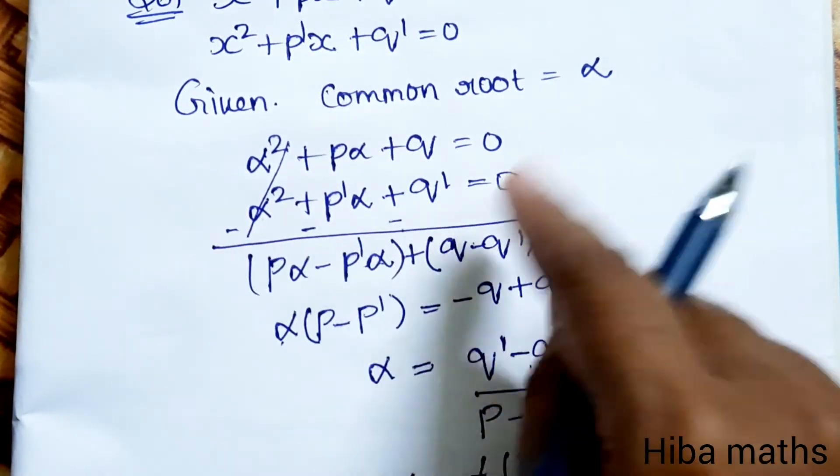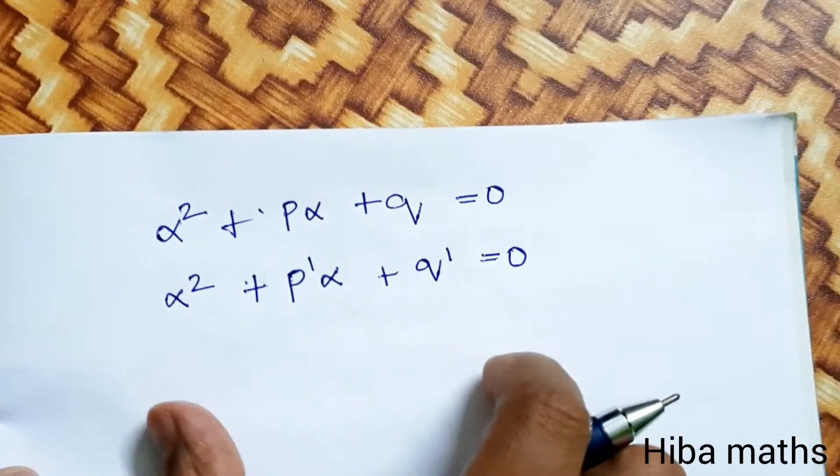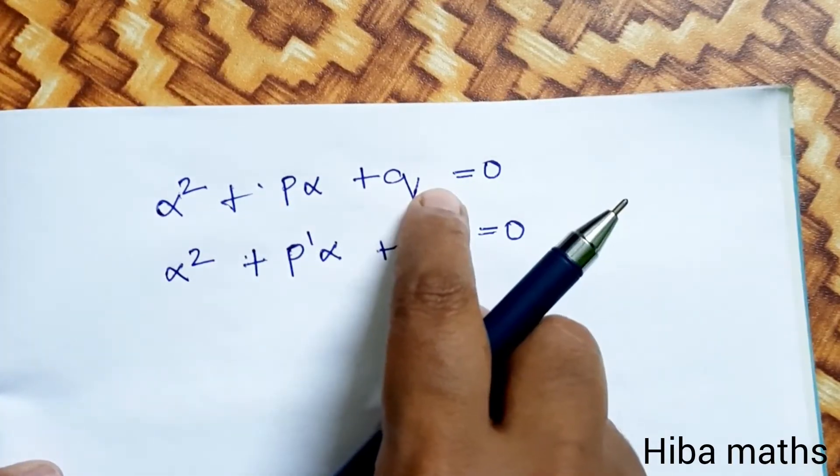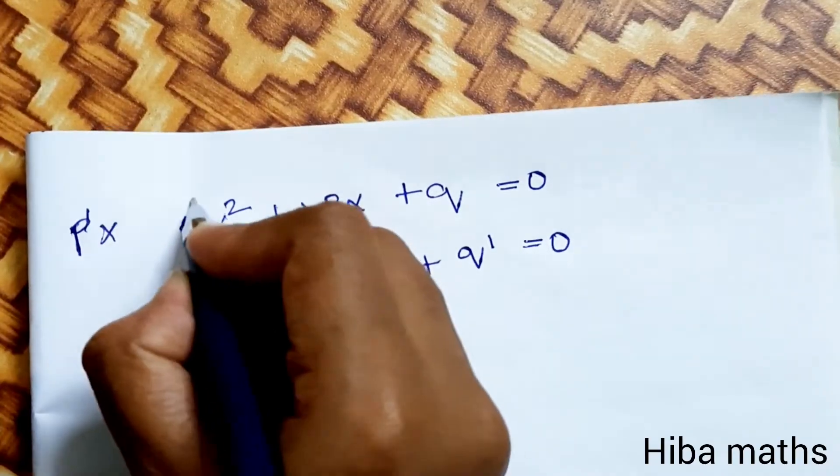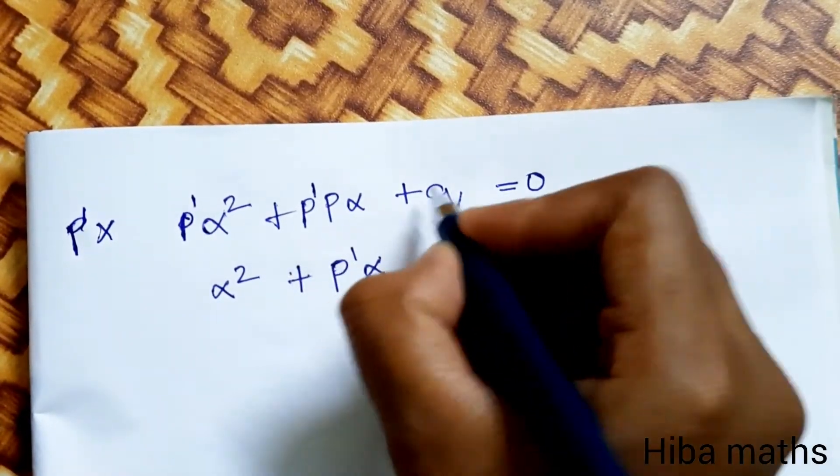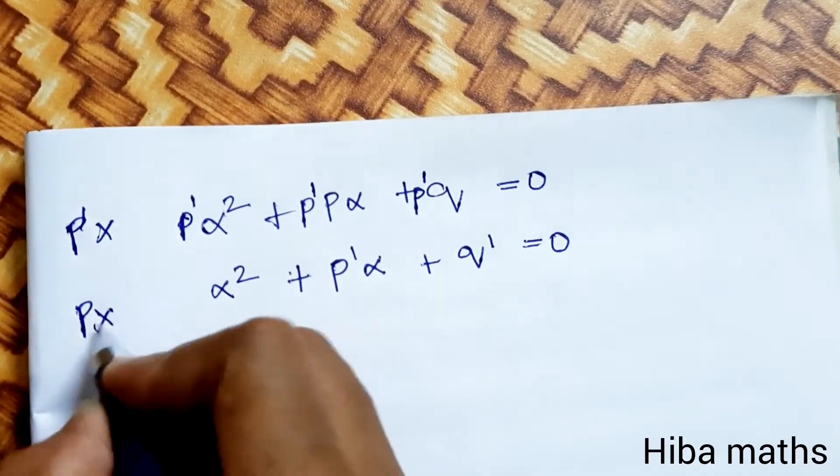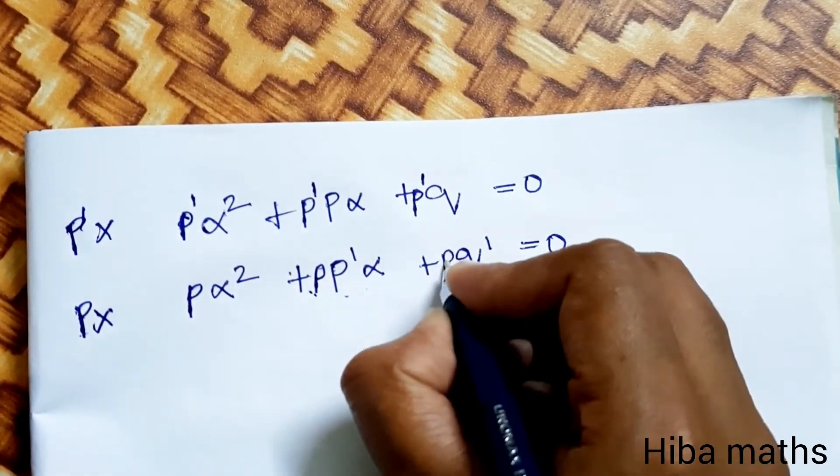So what do we do? p is in the first equation, p' is in the second equation, and we have to cancel the common term. For the given equations, we multiply p' into the first equation and p into the second equation. So p' times the first equation and p times the second equation.